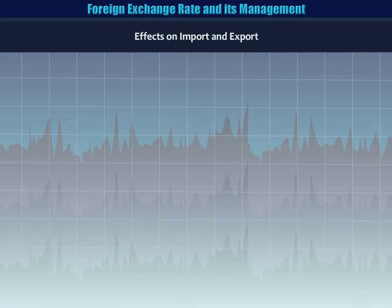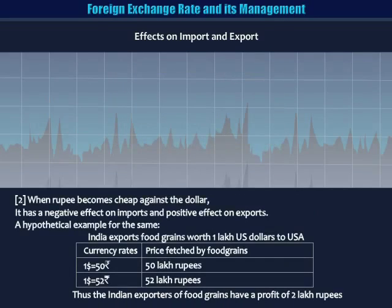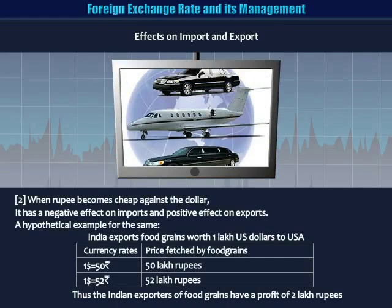Effects on import and export. One: when the rupee becomes expensive against the dollar, it has a positive effect on imports and a negative effect on exports — imports have become cheaper and exports have become expensive. Two: when the rupee becomes cheap against the dollar, it has a negative effect on imports and a positive effect on exports — imports become expensive and exports become cheaper.